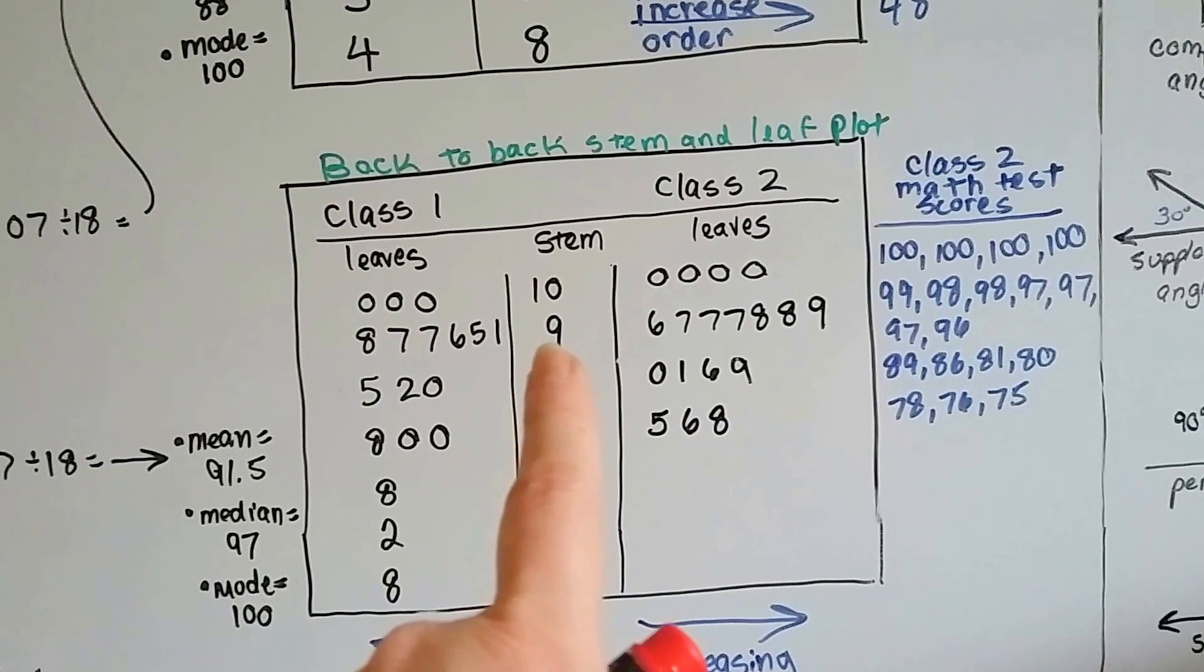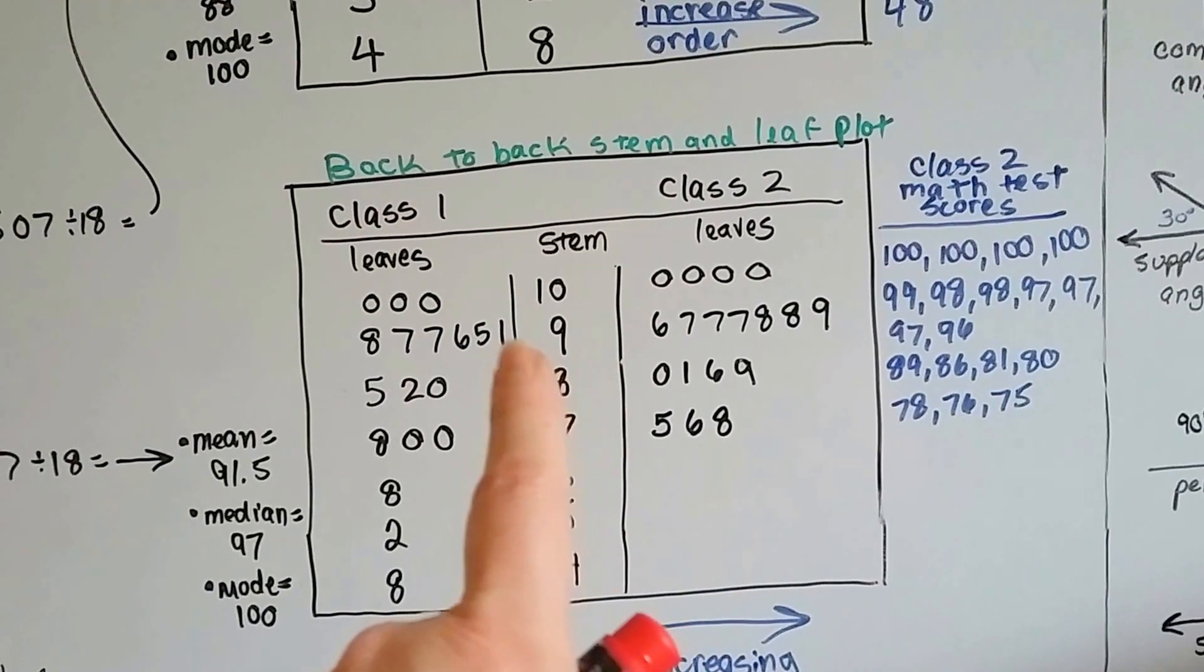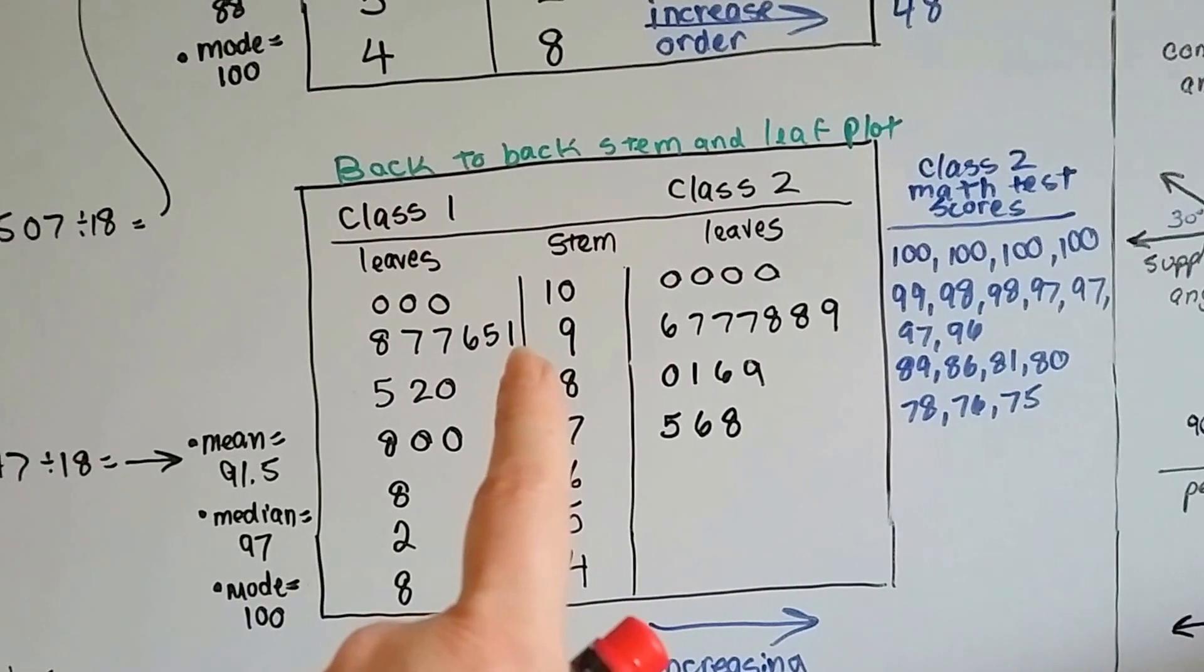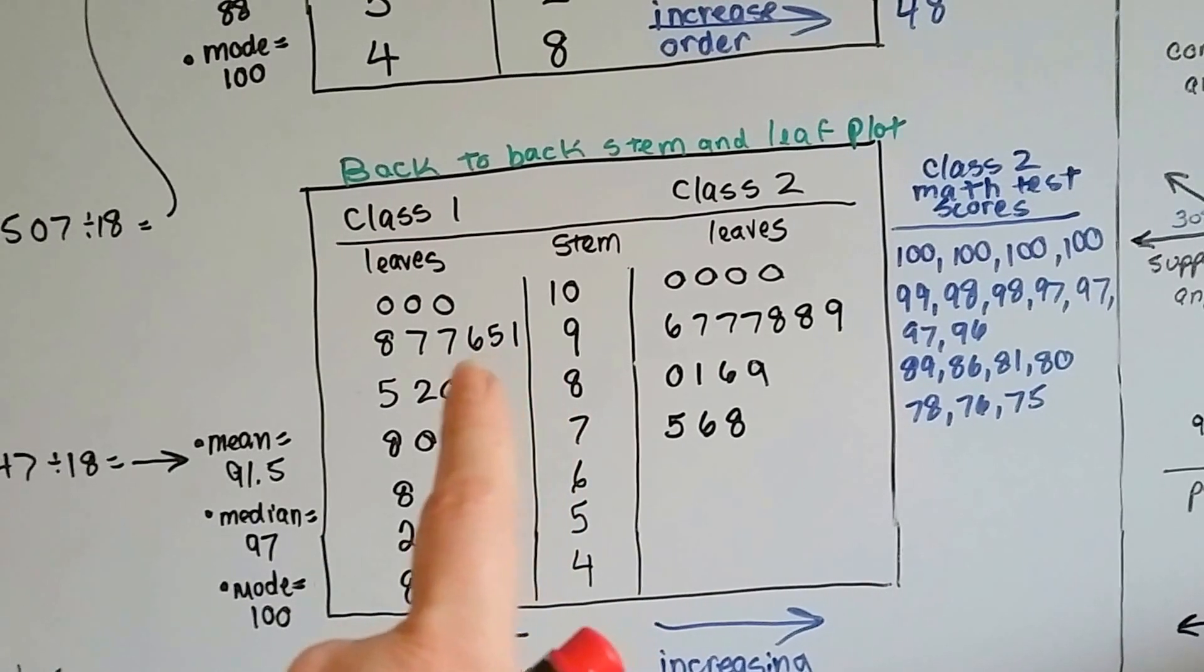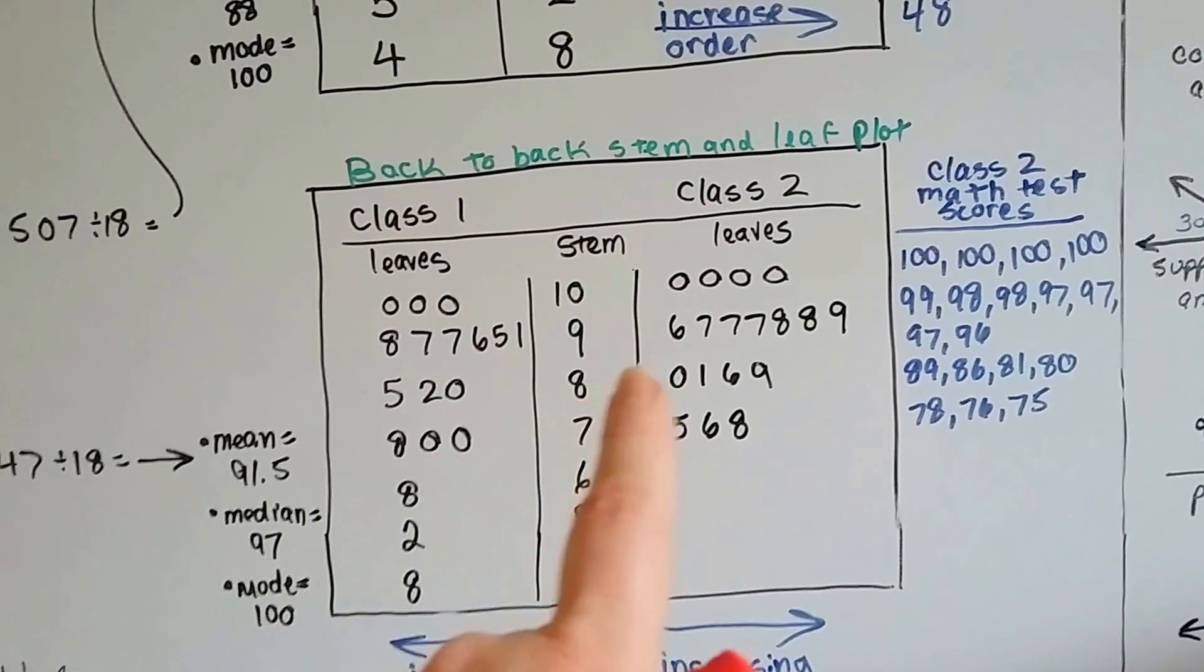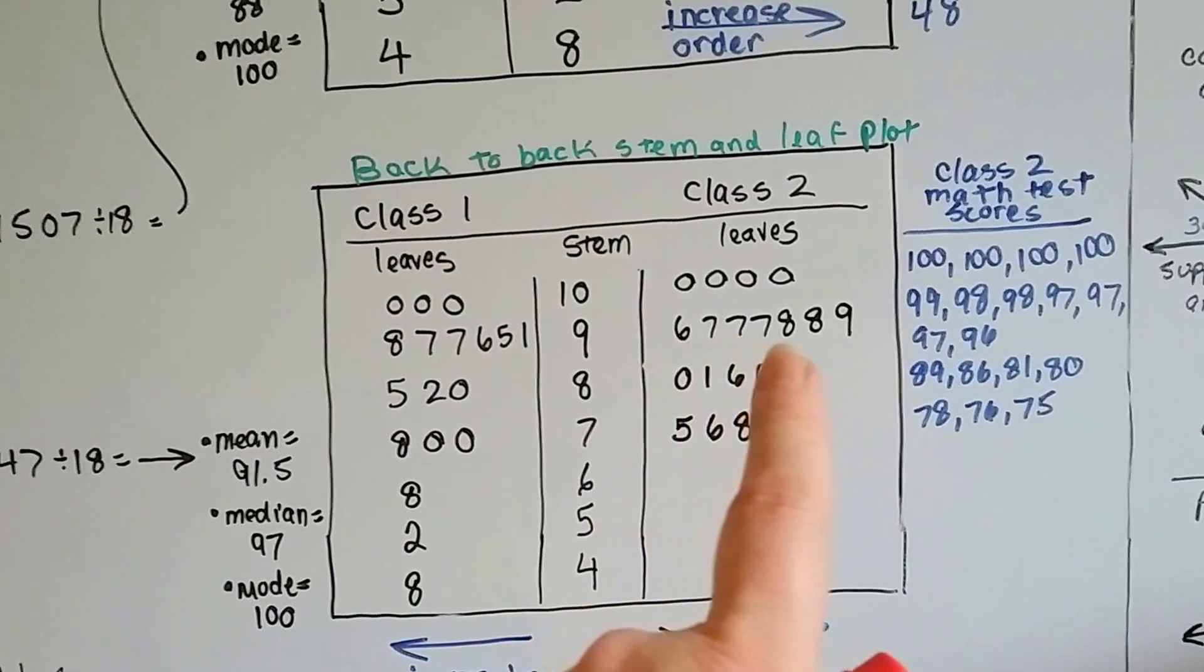So for the scores in the 90s for class one, it goes up as it goes to the left: 1, 5, 6, 7, 7, 8. And for class two,